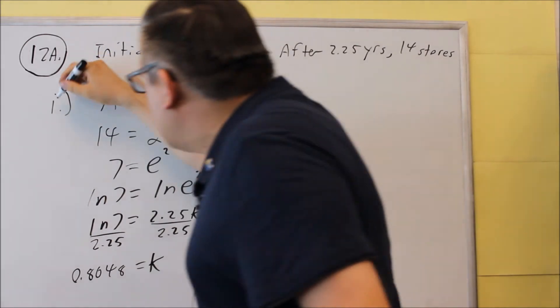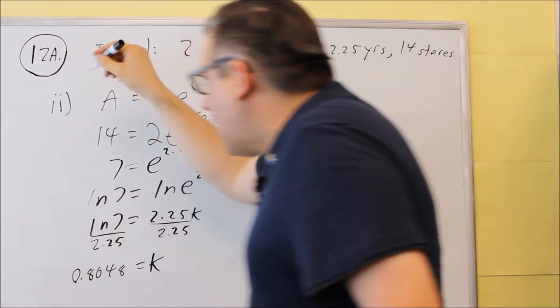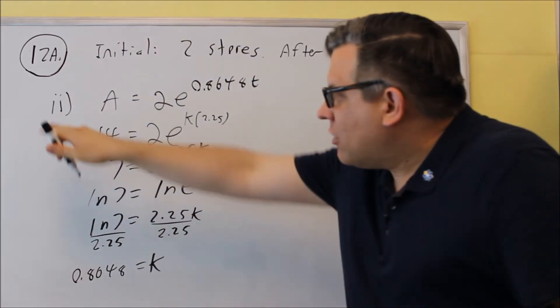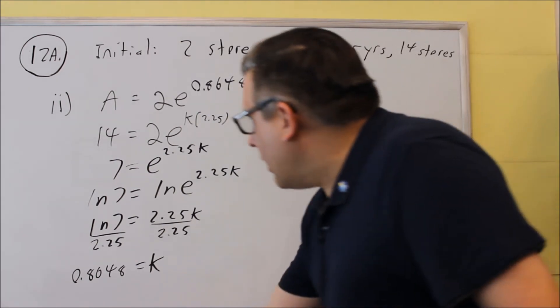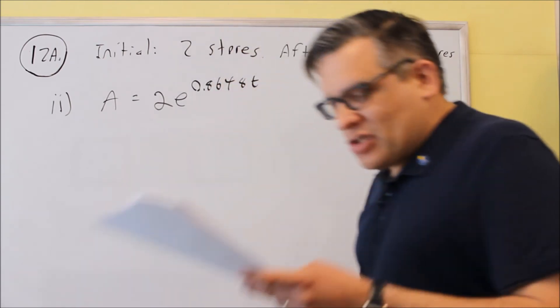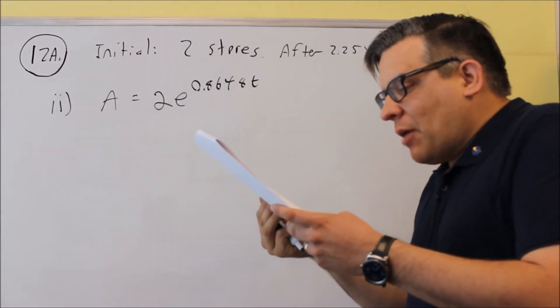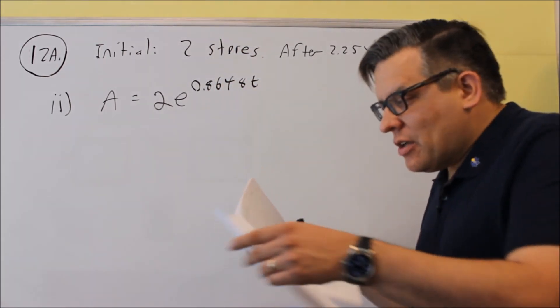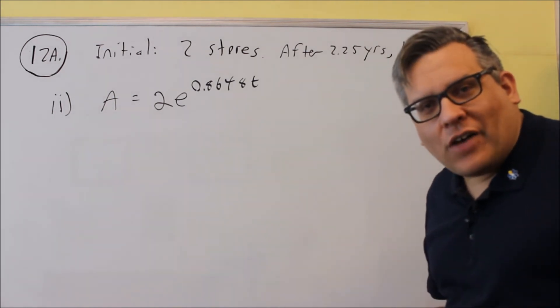Now for part I, rather, for the second part, double I, we're going to use this formula there. And what this says is, find out how many stores are estimated after 3.5 years.